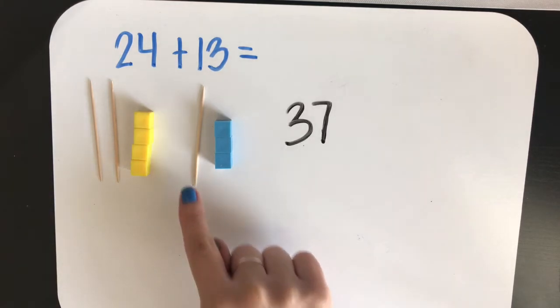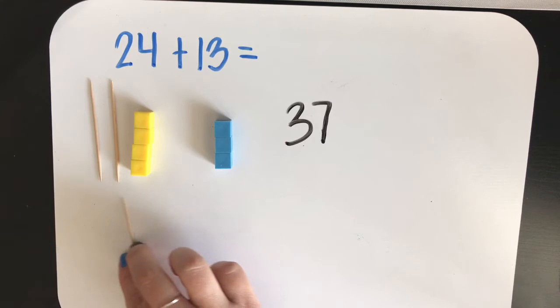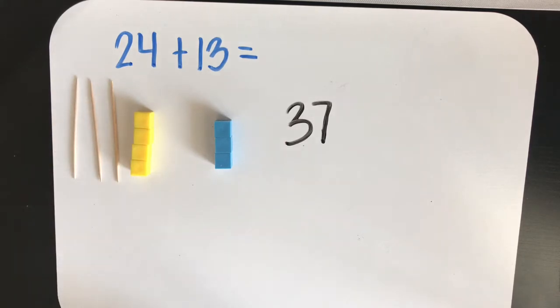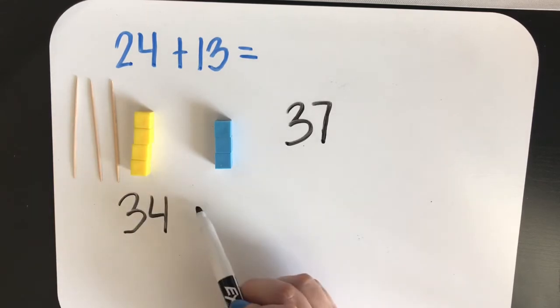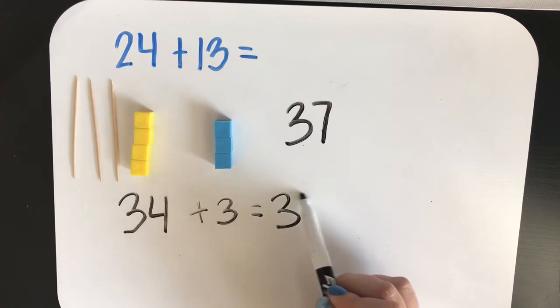So, if I move the ten here, this number now becomes 34 plus 3 equals 37.